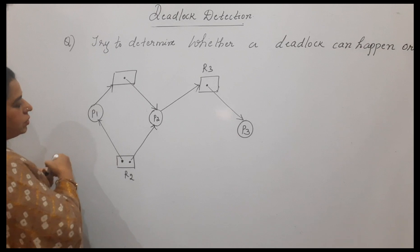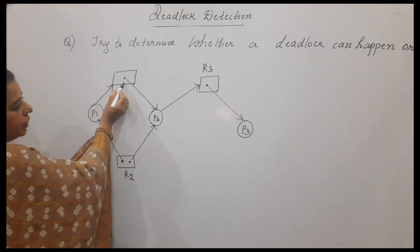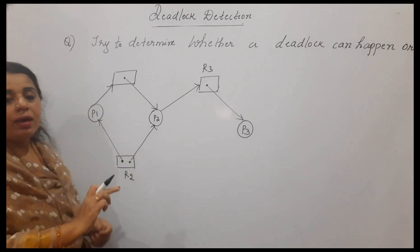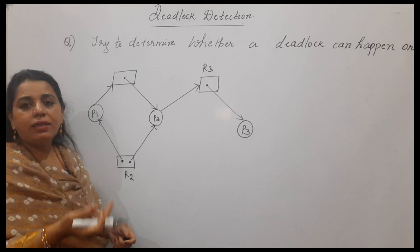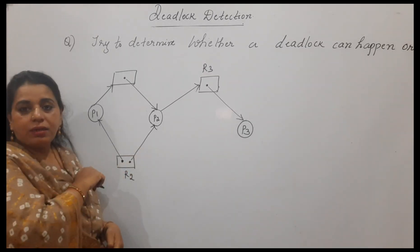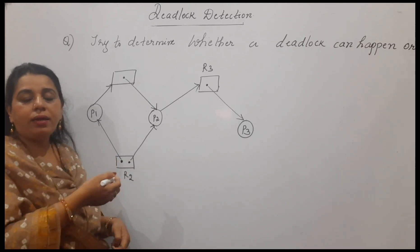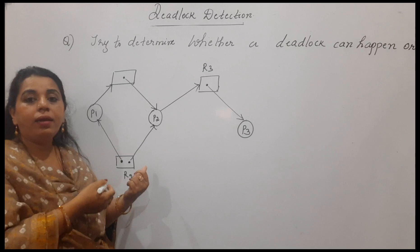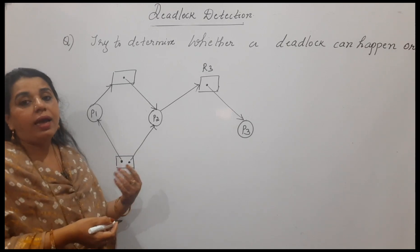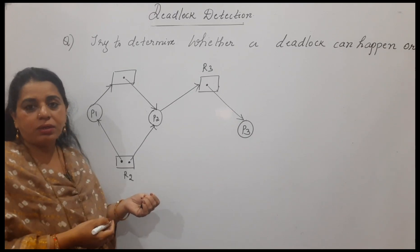Look here — we can see a cycle formed. Starting from process P1, P1 is moving to P2, then once again back to P1. So there is a cycle formed, and once a cycle is formed we would normally say that deadlock is occurring. But here there are more than one instance, so we should not just tell by observing. Rather, we can start solving this example in a tabular form, showing the different resources, how they are assigned to the processes, and what requests the processes are making.